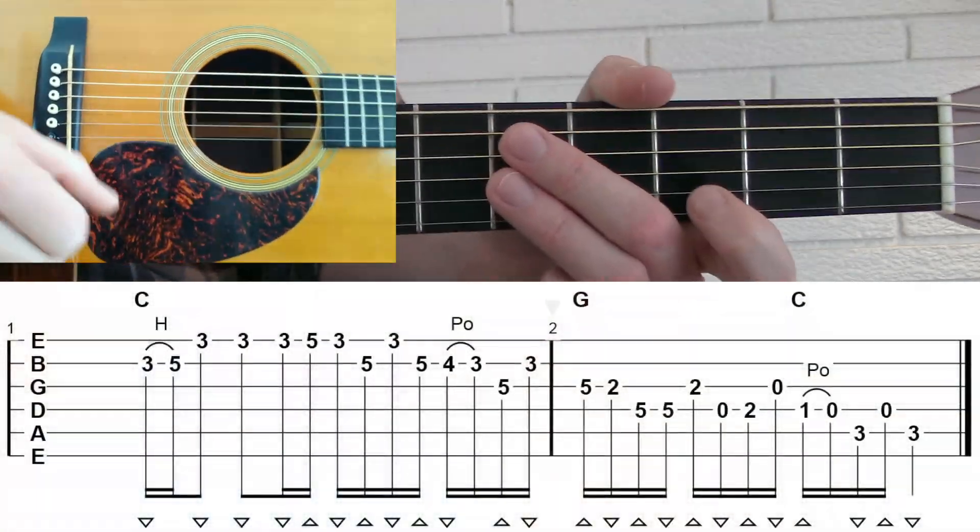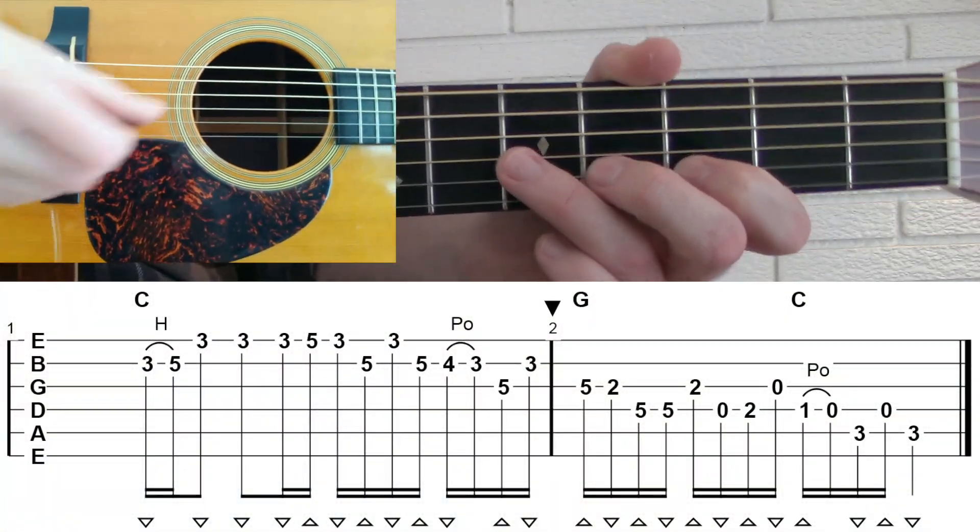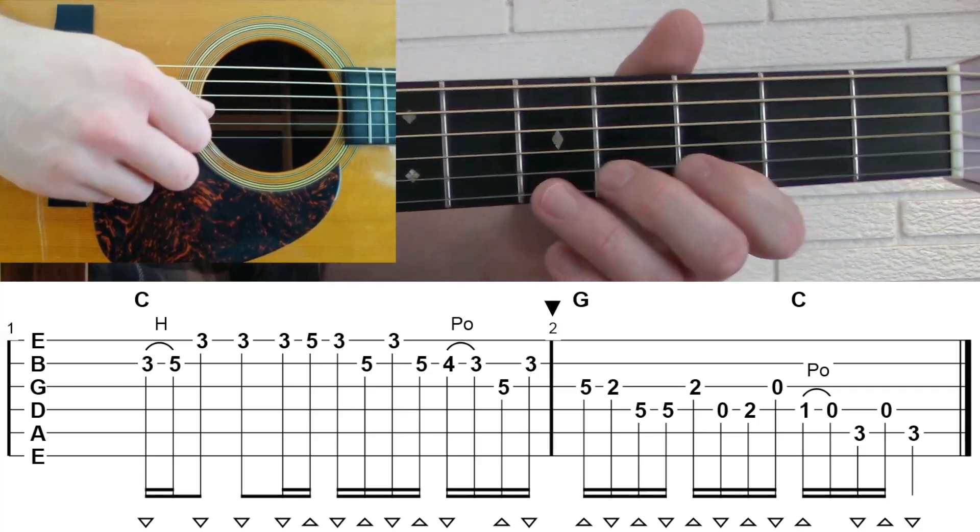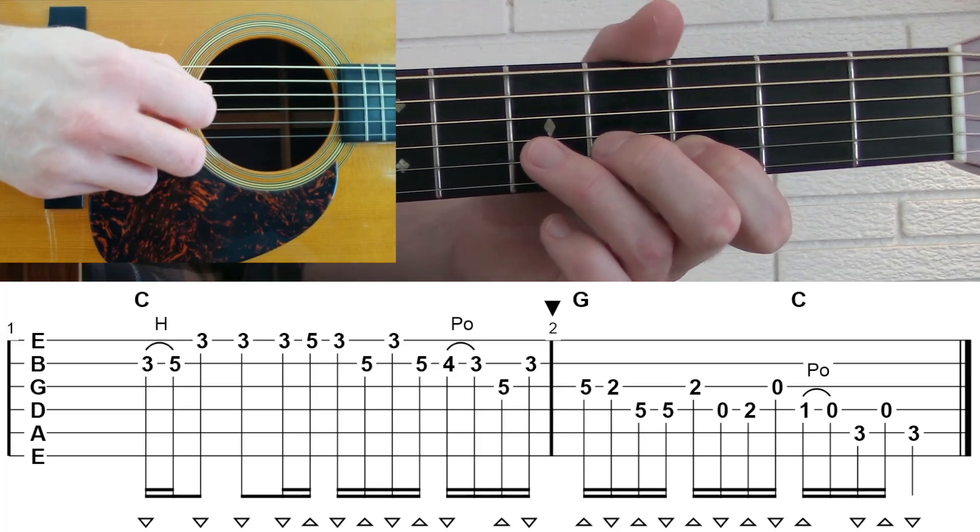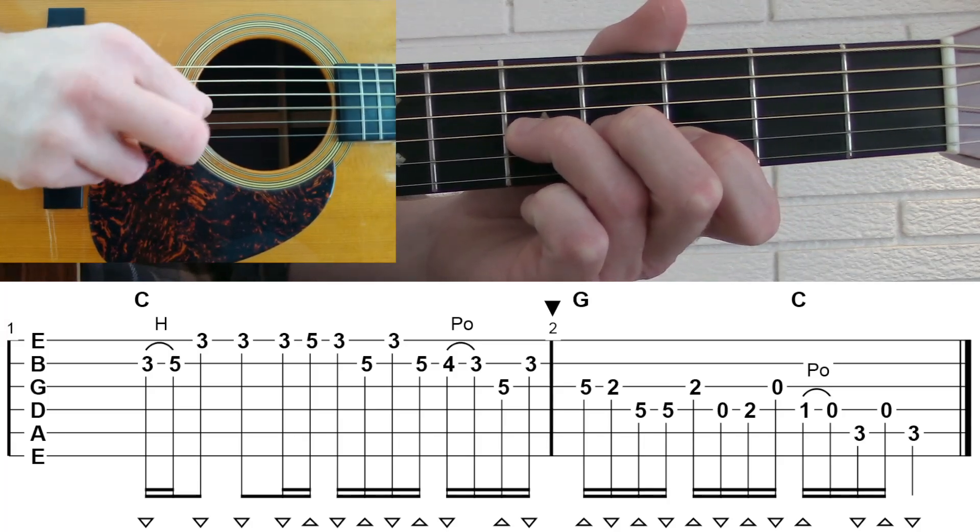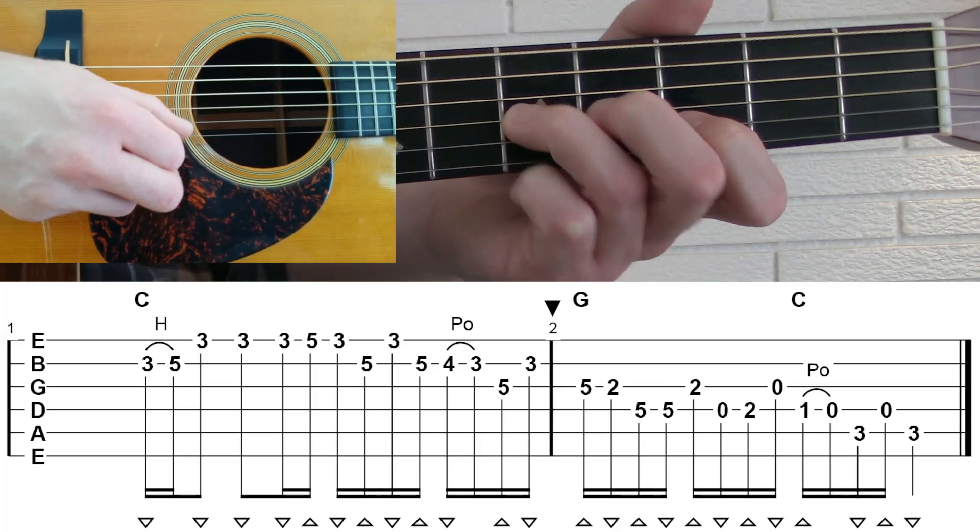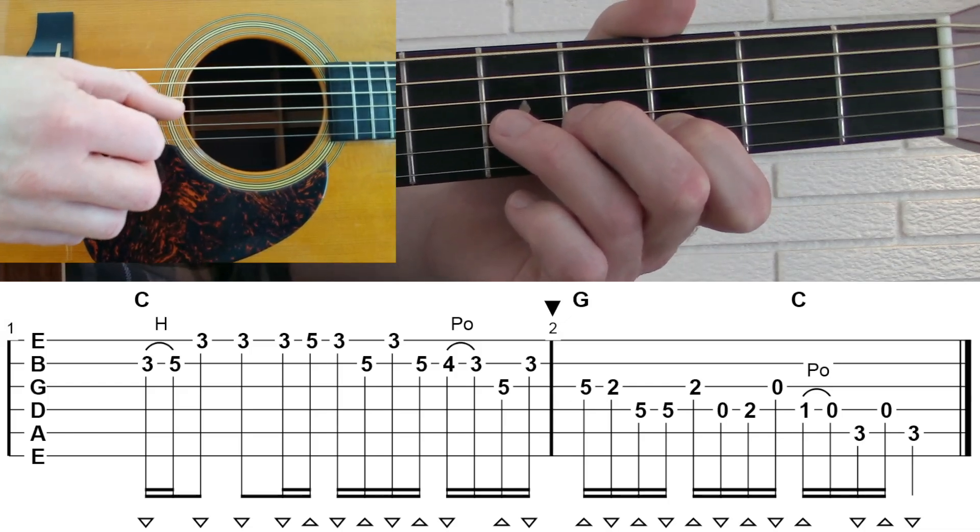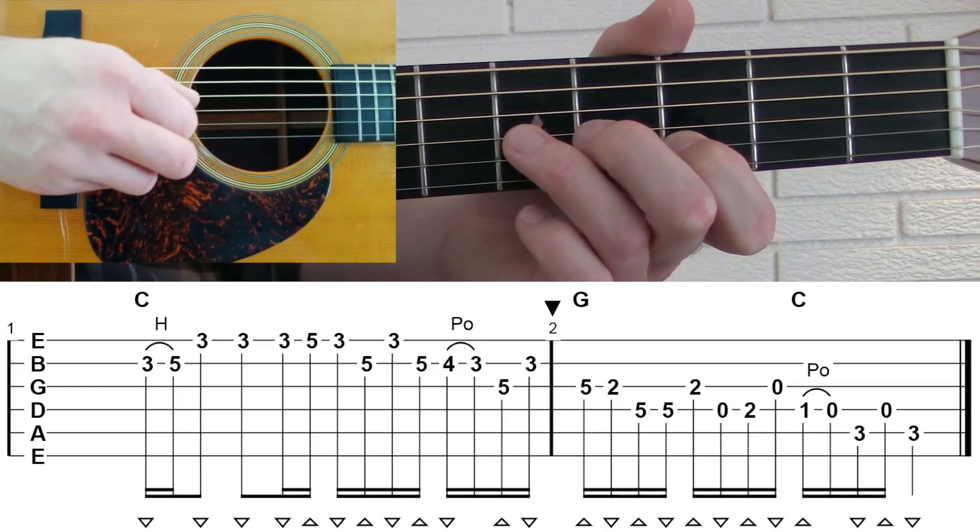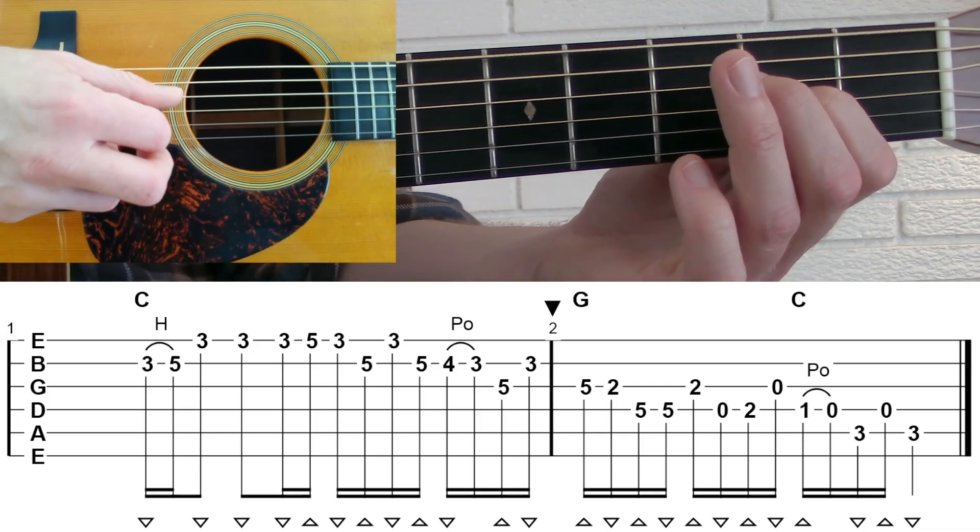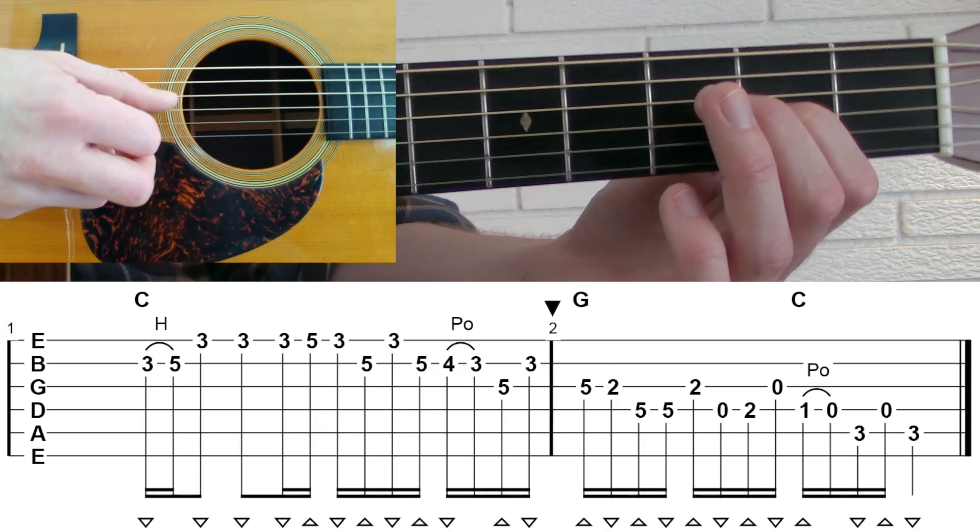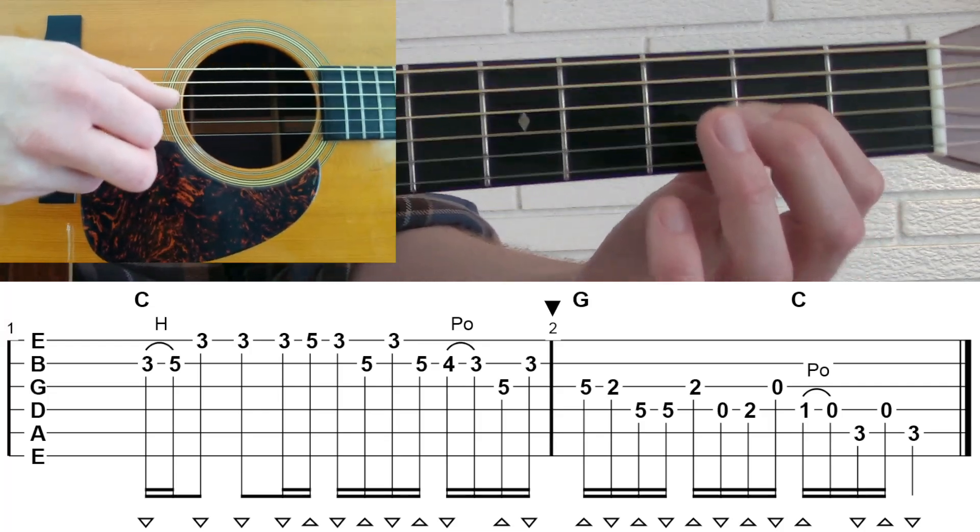So looking at measure number two now of this Tony Rice lick. Remember, we're coming off of this kind of classic pull off interval that we hear Tony Rice play a lot. Then we're playing fifth fret G back to third fret high B. Then you'll see at the beginning of measure number two here, we have fifth fret G to second fret G. So we're going to kind of switch positions here and go down to the second fret G with our index finger.